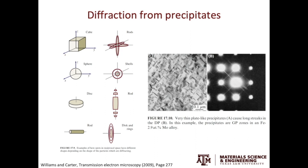Out of all the precipitates, the GP zones in aluminum or iron-based alloys are most famous in diffraction studies. GP zones are very fine precipitates, with a few nanometers in length but only a few atomic layers in thickness. From the TEM micrograph here, you can see many GP zones aligned in one direction, and they correspond to streaking in the diffraction pattern in that direction. For precipitates aligned orthogonal to the first set, they cause streaking orthogonal to the first set of streaks.